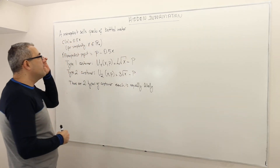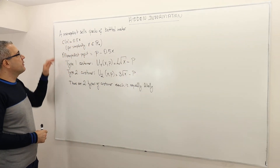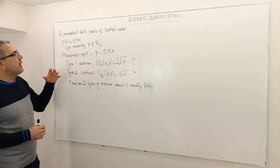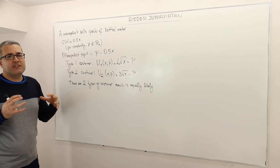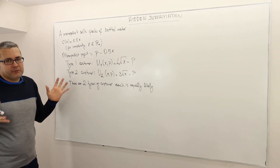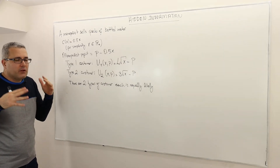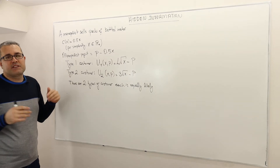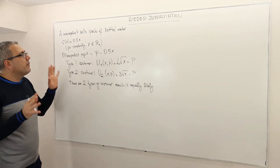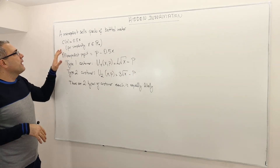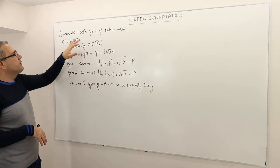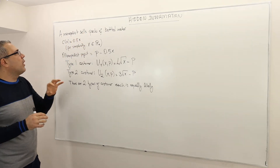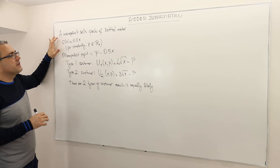Here is the example. There is a monopolist and the monopolist sells packs of bottled water. If you don't like this example, you could go with internet packages instead. But anyway, I'm going to stick to this example. The packs of bottled water — this is what the monopolist sells.